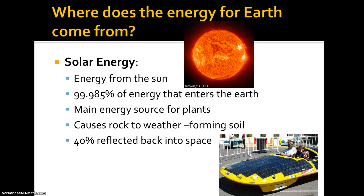Where does energy for the Earth come from? Pretty much for our planet, we know that energy can't be created nor destroyed — it's got to come from somewhere. Most of the energy from our Earth, this third rock from our sun, comes from the sun. Solar energy represents 99.985% of the energy that enters the Earth. You don't have to memorize that percent, but you do need to realize that there is not 100%, so there are other sources of energy we'll talk about.